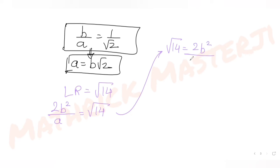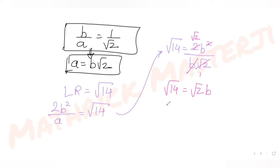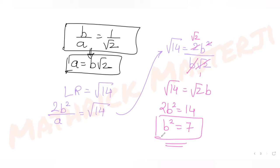Substituting a = b√2 into 2b²/a = √14, we get 2b²/(b√2) = √14, which simplifies to √2 · b = √14. Squaring both sides gives 2b² = 14, so b² = 7.